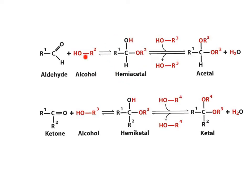This was an equilibrium reaction. The hemiacetal was unstable, and it was going to continue reacting to produce an acetal. The same reaction also takes place with the family of ketones, in which a ketone can react with an alcohol to produce a hemiacetal that in the presence of an acid catalyst will continue to produce an acetal or ketal.